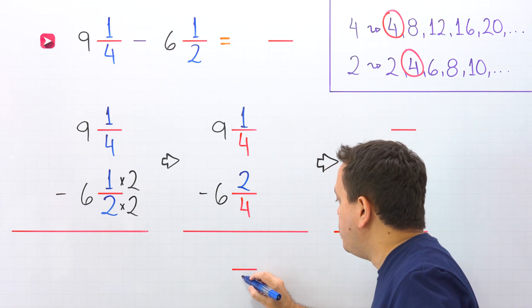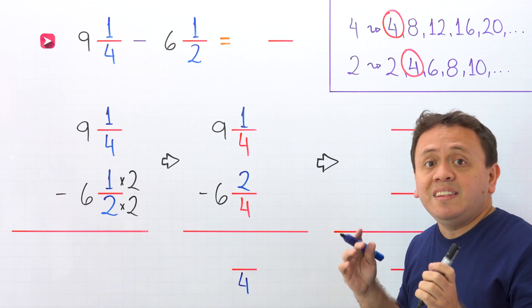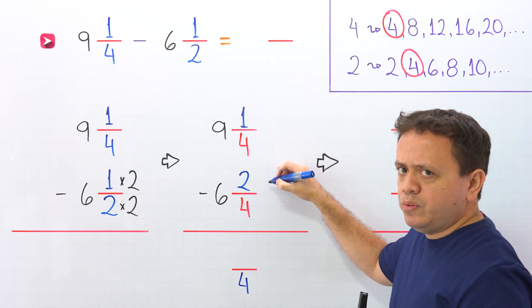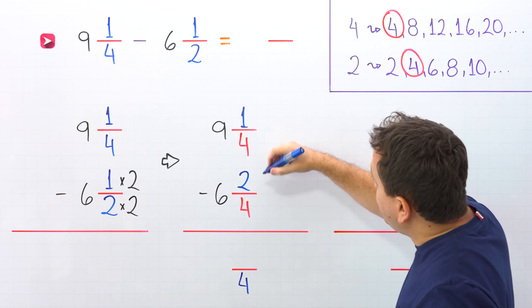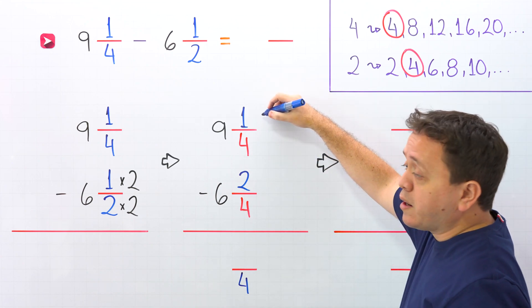These two fractions have the same denominator, 4. We put 4 one more time, and we continue by subtracting the numerators. 1 minus 2? Hold on! We cannot subtract 2 from 1, because 2 is bigger than 1.